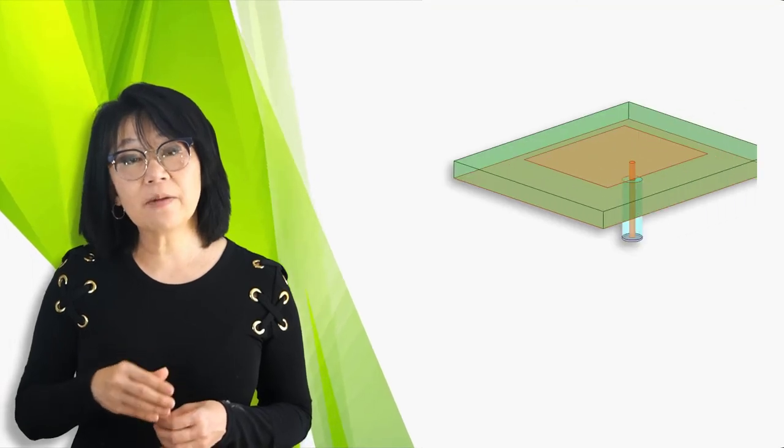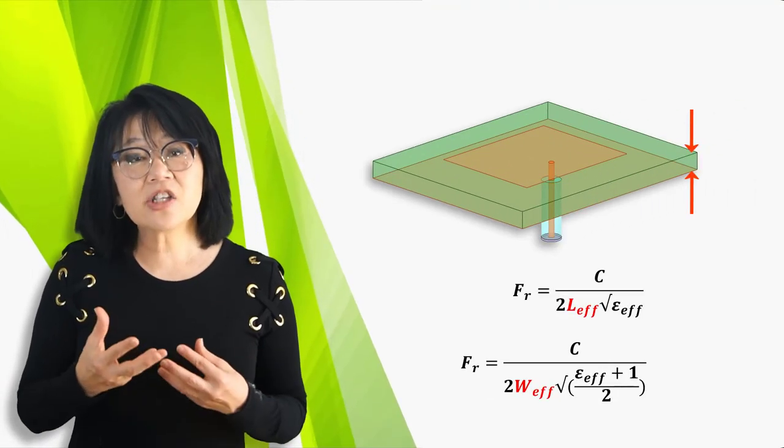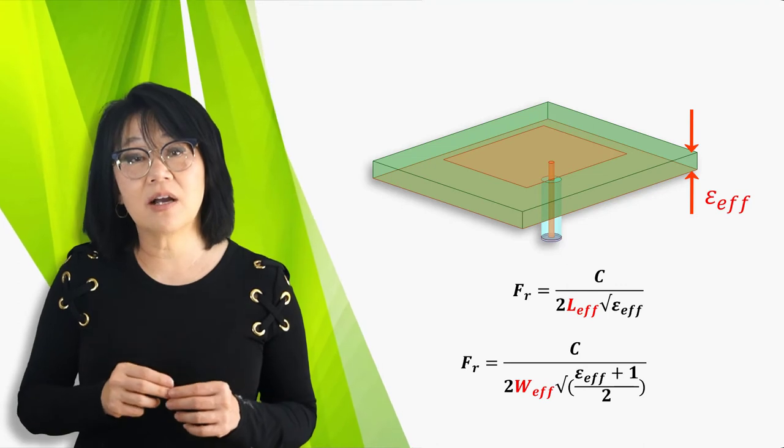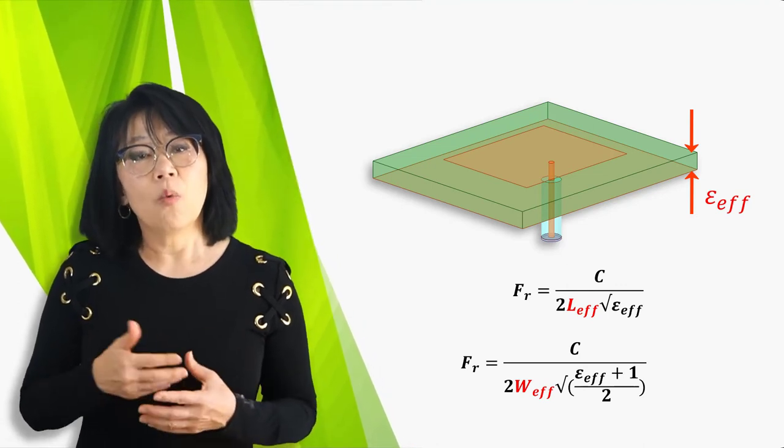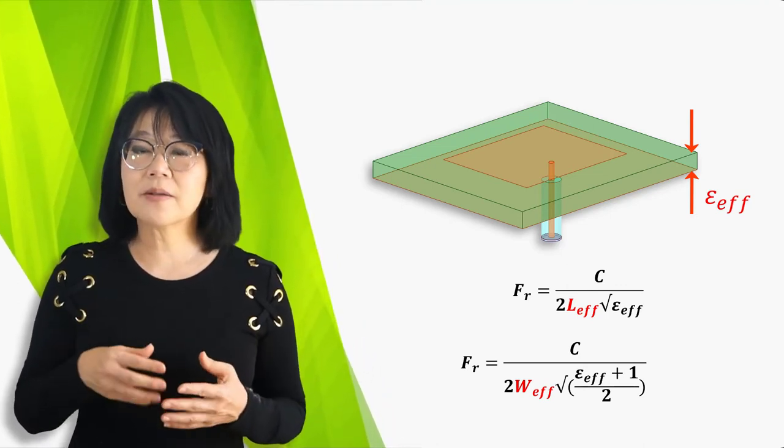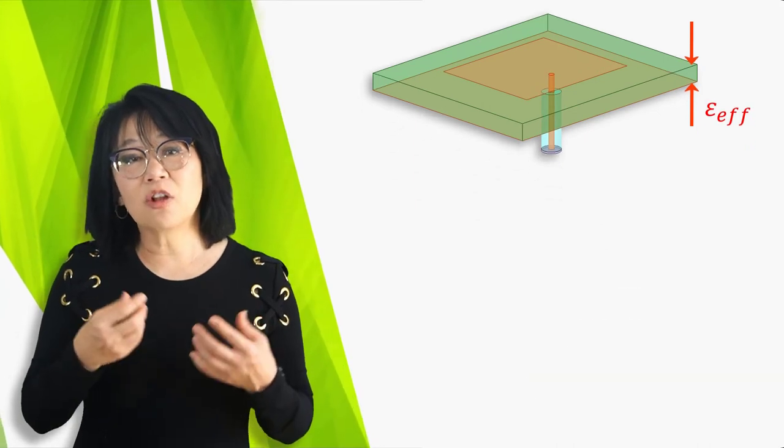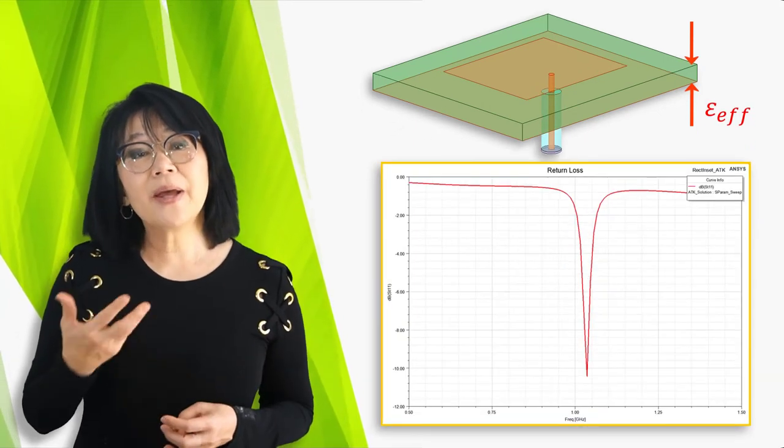For good antenna performance, typically a thick dielectric substrate having a very low dielectric constant is desirable. Why? Because this provides a better efficiency, a larger bandwidth, and a better radiation pattern.